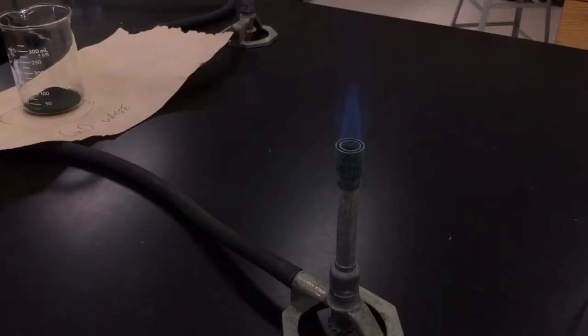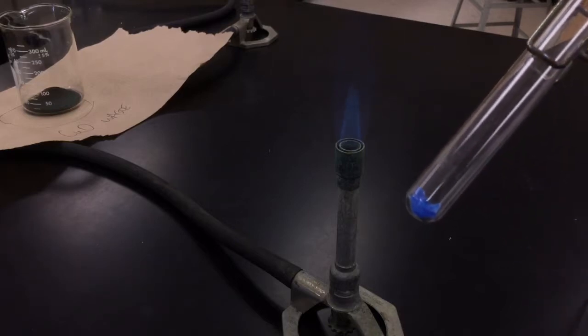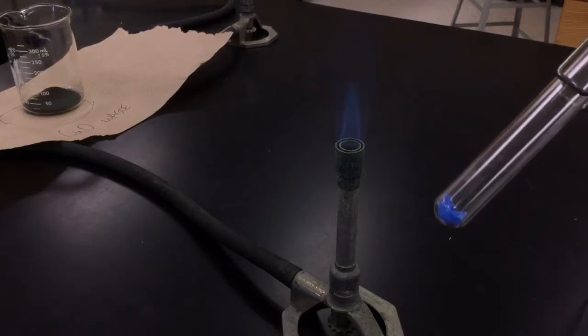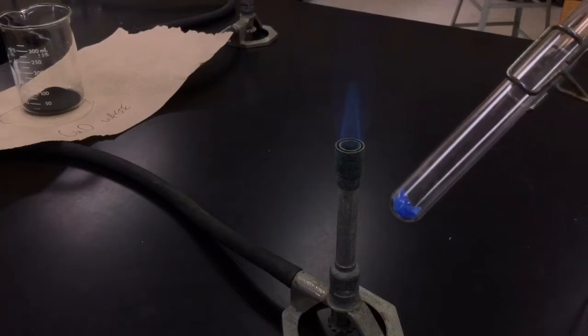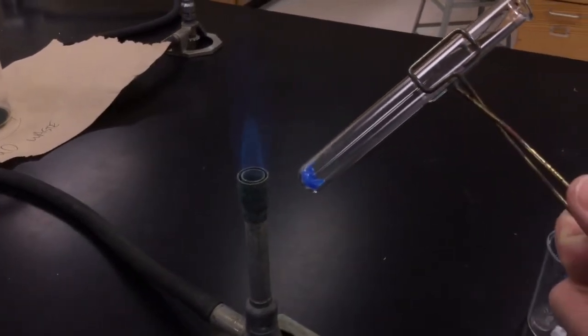Alright, so I've got my Bunsen burner lit and I've got my test tube with my blue vitriol in it. And what we're going to do is heat this up in the Bunsen burner. Again, we're going to point the mouth of the test tube away from anyone because some hot steam is going to be coming out. We're going to hope to kind of show that in our picture.